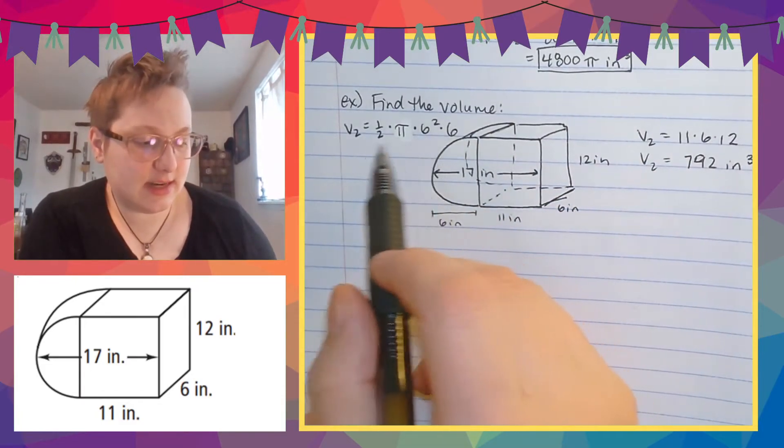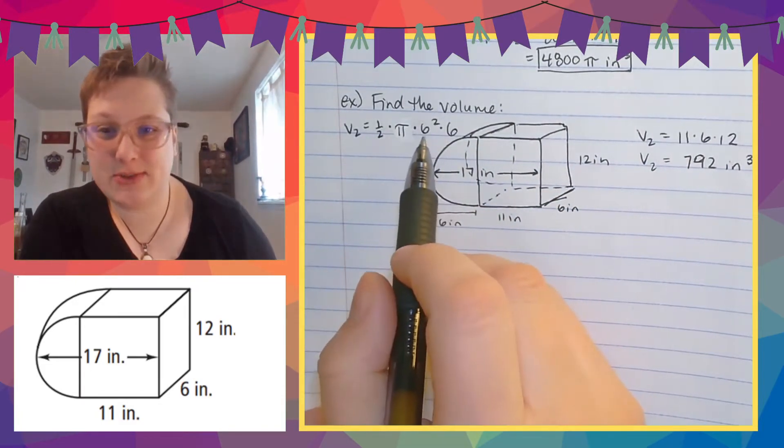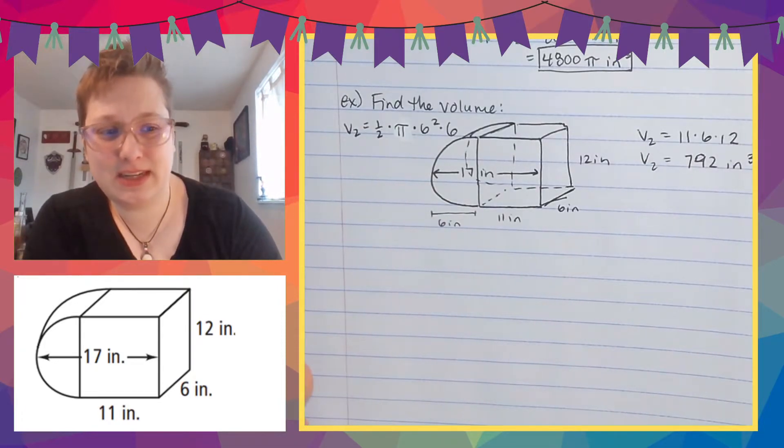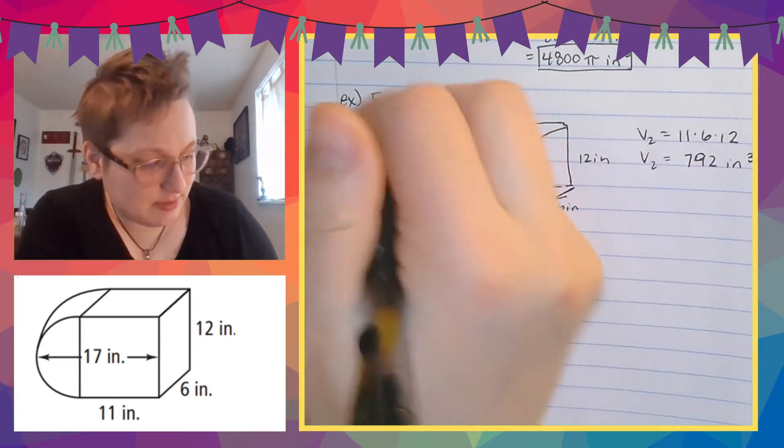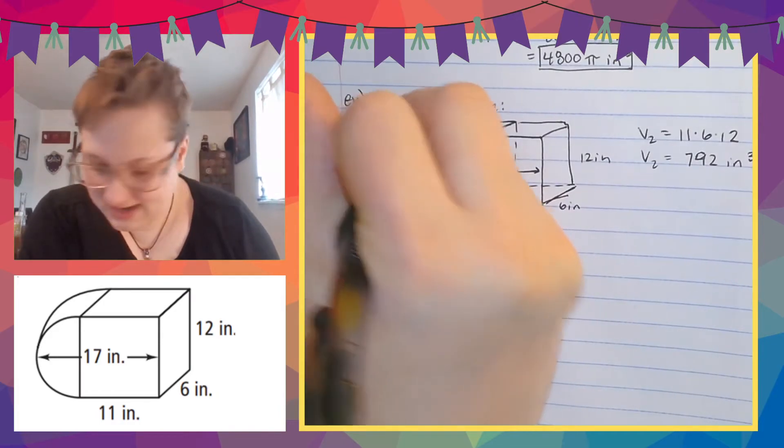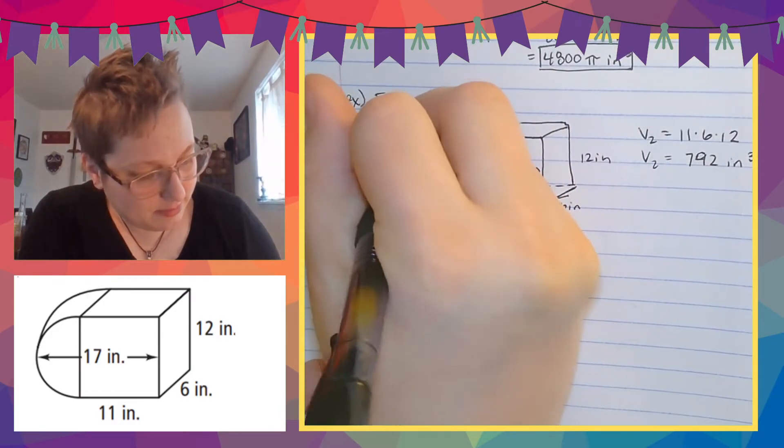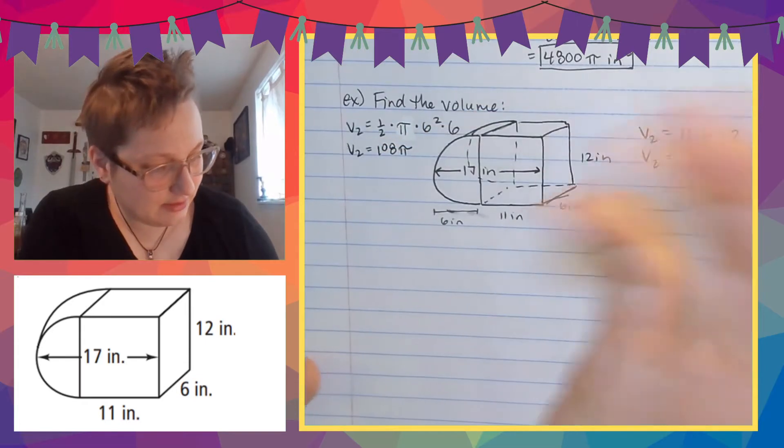So, 36 times three, cause half of six is three, 36 times three is 90, 100, and I don't know, 108. I did know. I just was afraid. 108 pi inches cubed.